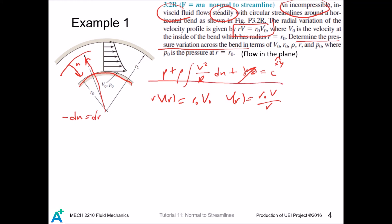If we take reference about this arc, we have p minus p naught plus rho, integrate from r naught to r, minus dr equals zero. We substitute in the expression for v.